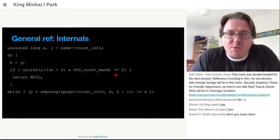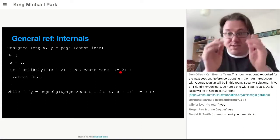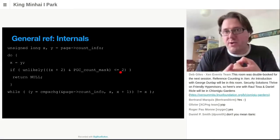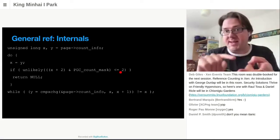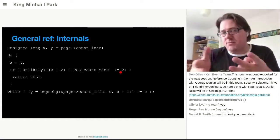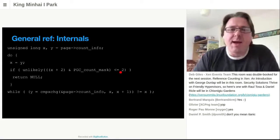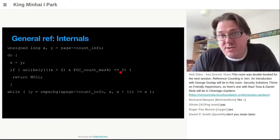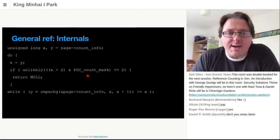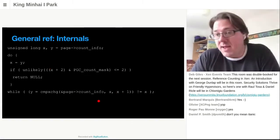Basically what we're checking for here is: this will fail if the count info is zero, as we've said. It'll also fail if it's minus one, which means adding one would overflow it. Or if it's minus two, because we actually reserve one for another purpose. So basically if it's zero, minus one, or minus two, we don't let it happen; otherwise we just try to increase it by one.